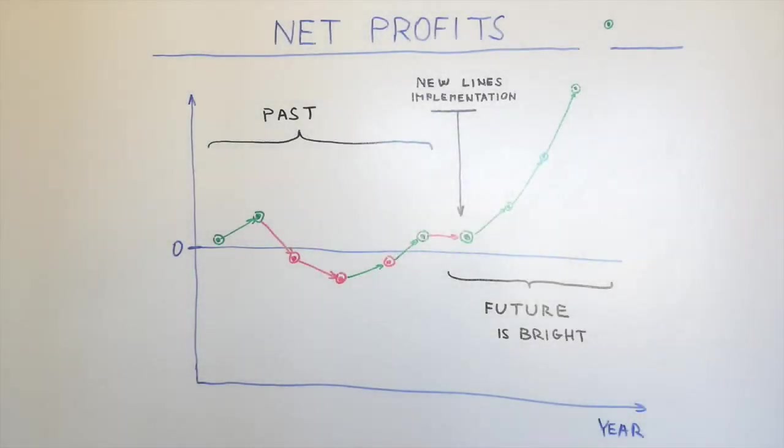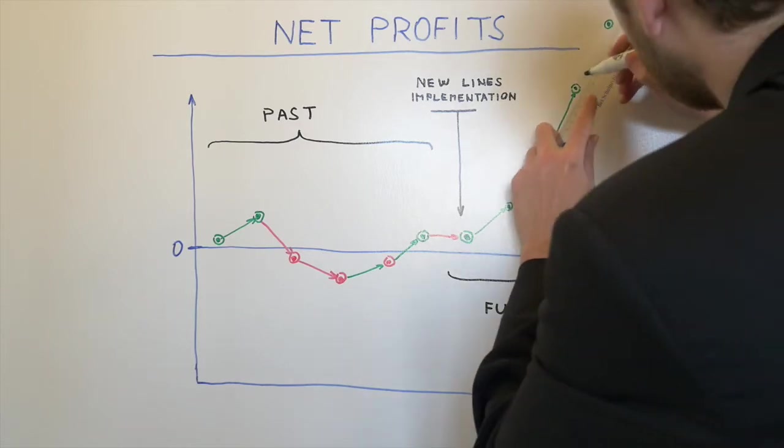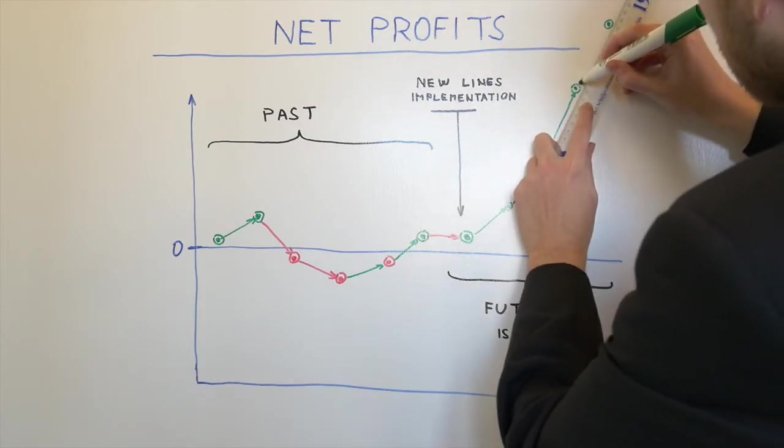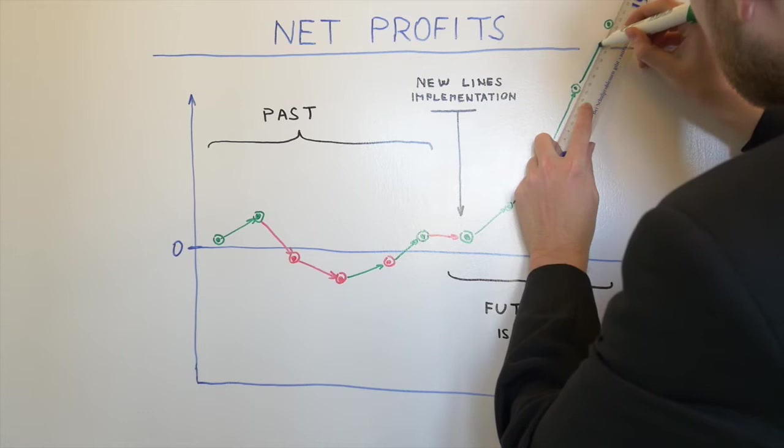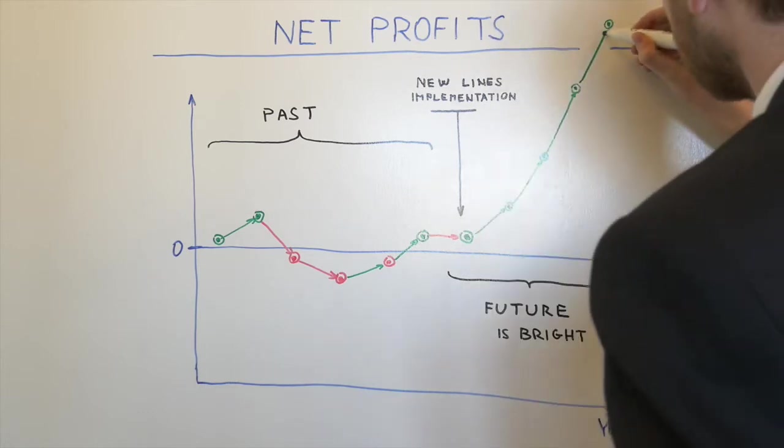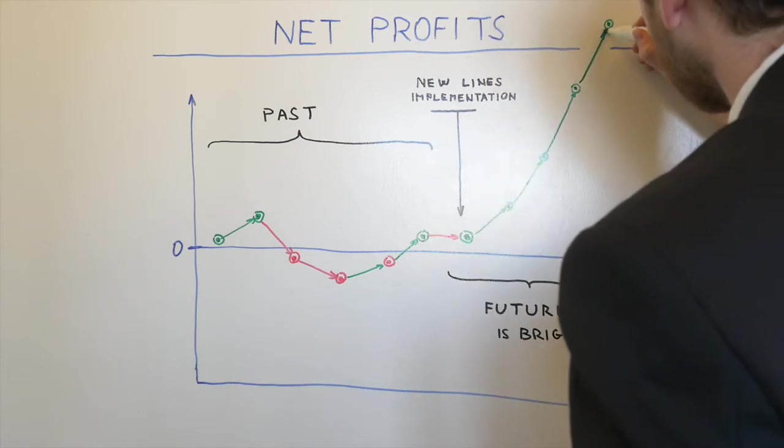It was another busy day in the Tiburit company. Stanislav was drawing the new estimates on the net profits, which included an expectation that three new production lines will soon start to operate.